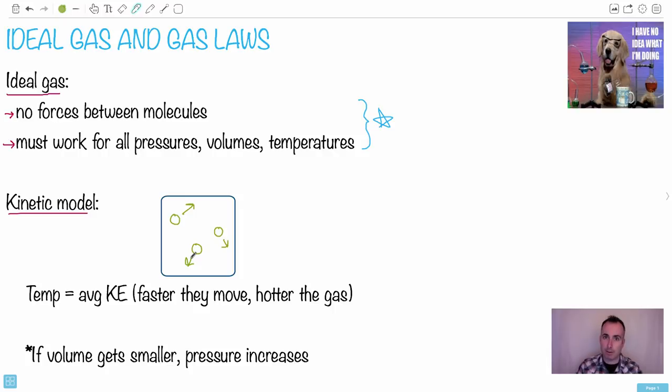So faster particles mean hotter gases, slower particles mean cooler gas. How slow can they go? They can go to zero and that's absolute zero. So that's the temperature.